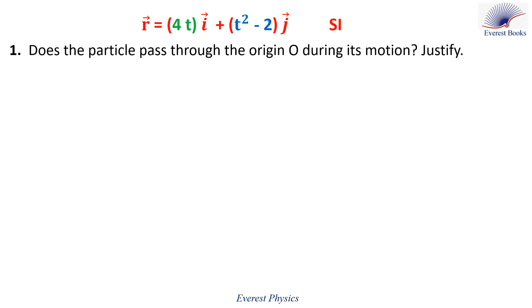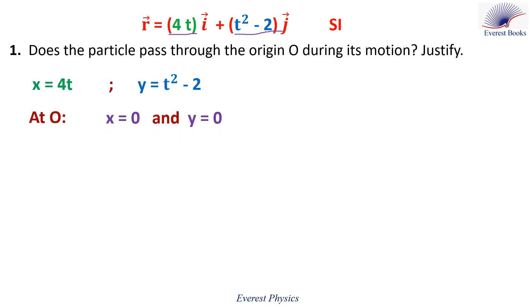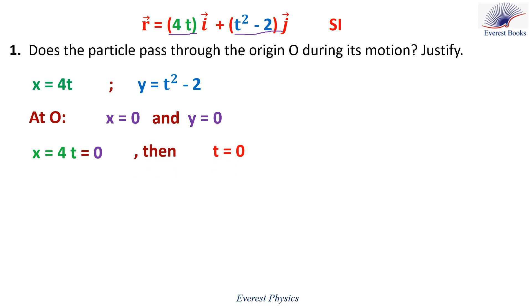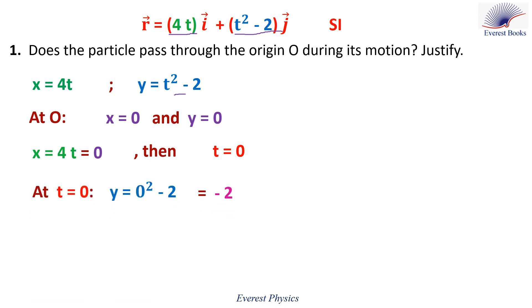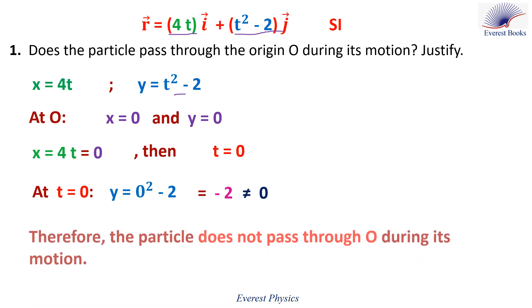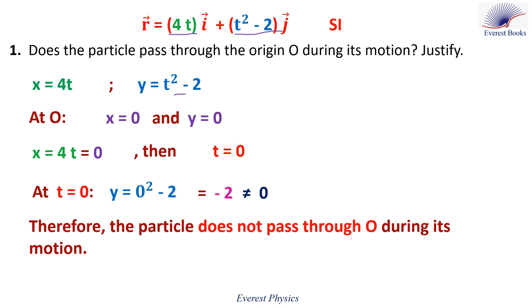Number one: does the particle pass through the origin during its motion? The particle passes through the origin when x and y equal zero at the same instant. Since R equals xi plus yj, we have x equals 4t and y equals t squared minus 2. At the origin, x equals zero and y equals zero. Setting x equal to zero gives t equals zero. Substituting t equals zero into the expression for y gives y equals minus 2. Since minus 2 does not equal zero, the particle doesn't pass through the origin during its motion.